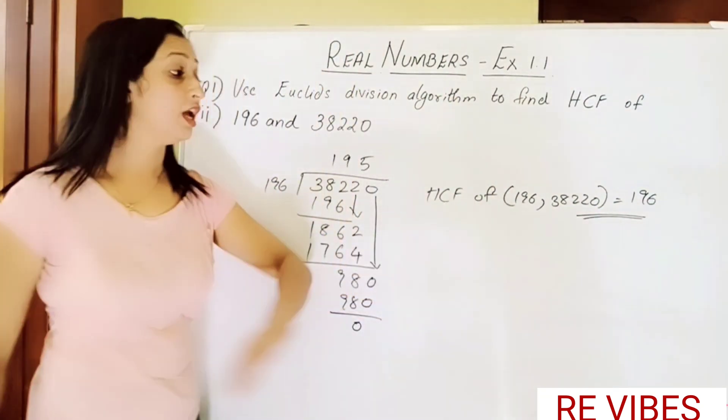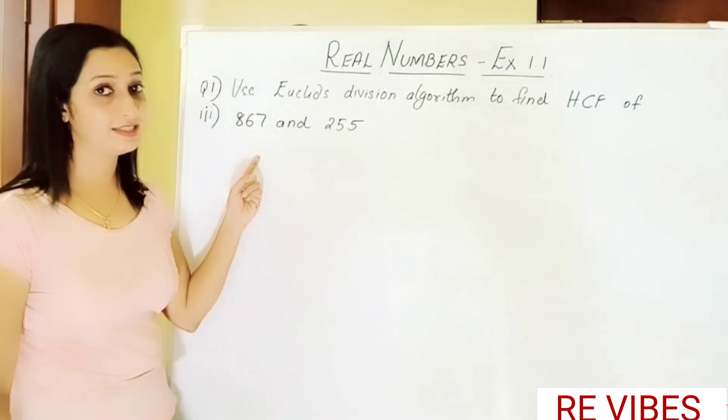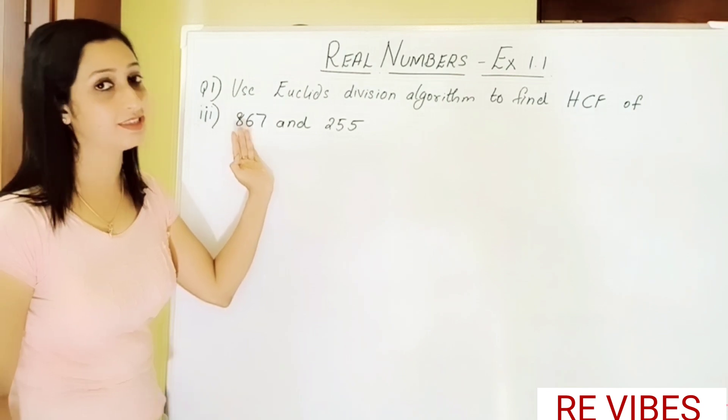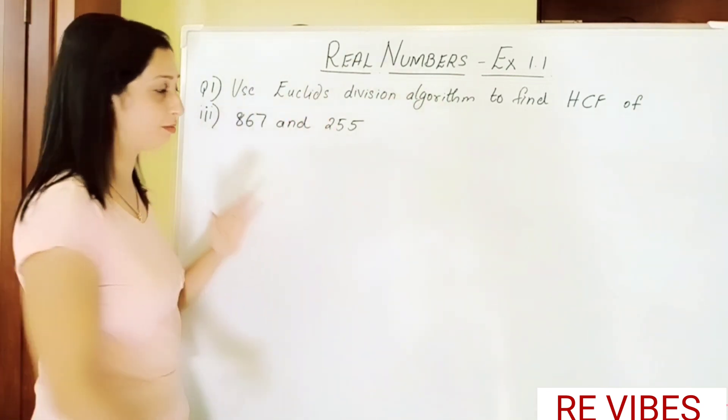Now let's move on to subdivision 3 of Question 1. So this is our third question which is to find out the HCF of 867 and 255 using the Euclid's division algorithm.